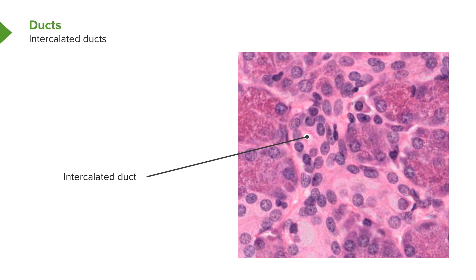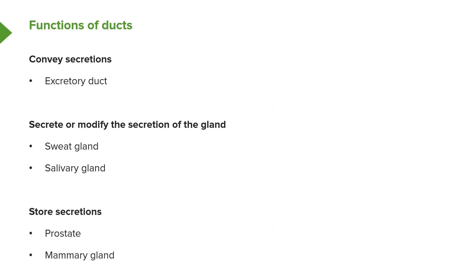Ducts have many functions. One is just to convey secretions — we call these excretory ducts. Sometimes the duct needs to modify the secretion product of the gland — we'll see examples of that when we look at sweat glands in a lecture on skin and also when we look at the salivary glands. Sometimes ducts store secretion — when we look at the prostate gland in the male reproductive system and also the mammary gland, we'll learn that the secretion product is often stored in the duct system until it's used or wanted.